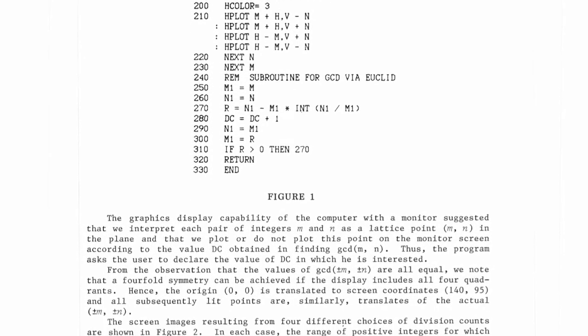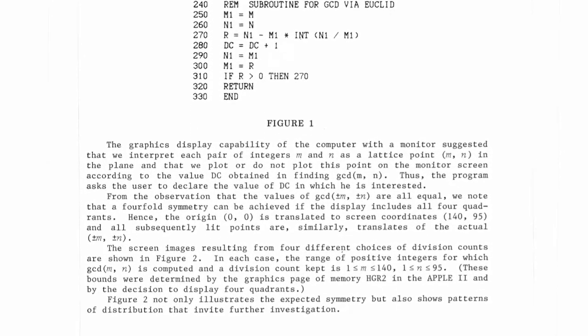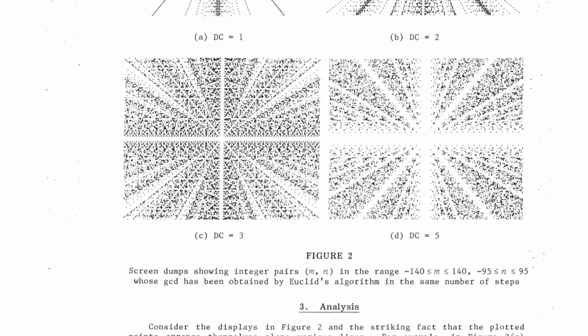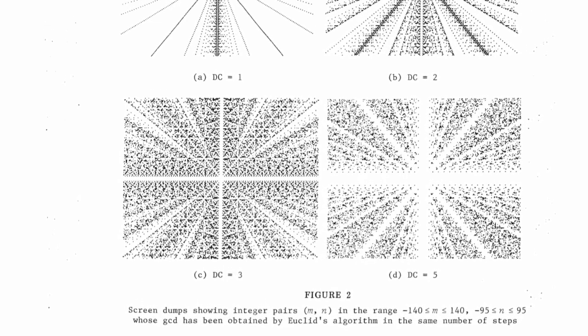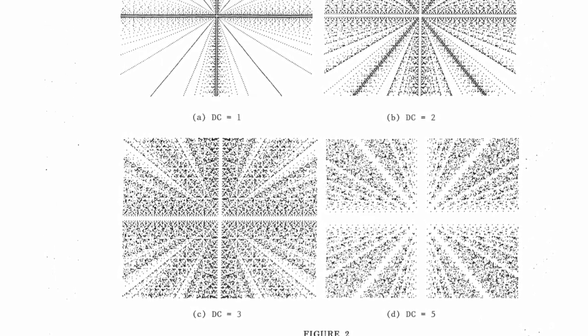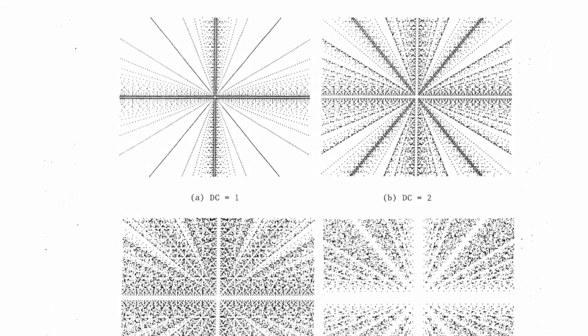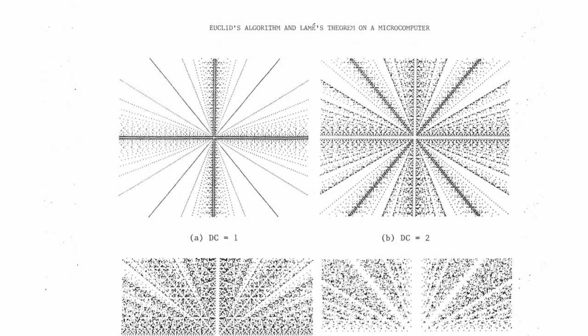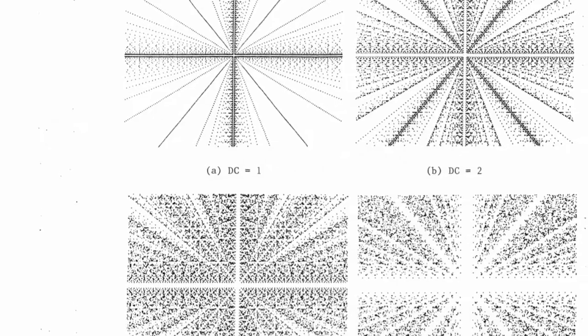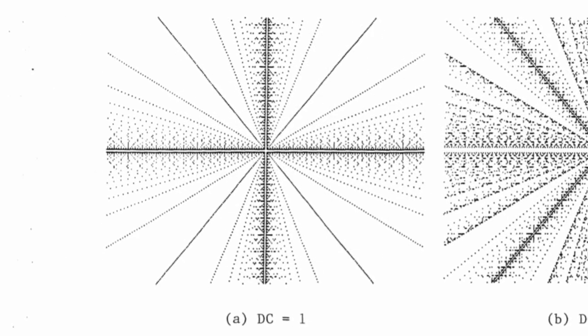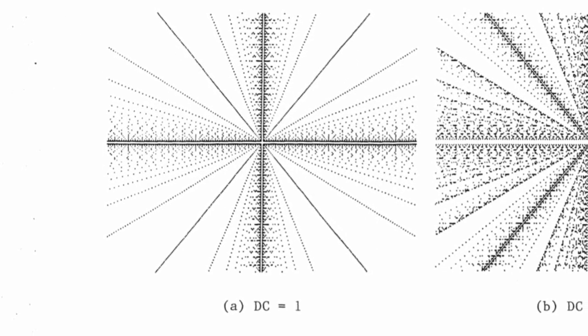The points (M, N) are plotted which have a fixed DC in calculating the GCD of M and N. A 4-fold symmetry is achieved because the values of GCD of plus or minus M, plus or minus N are all equal. Looks like some awesome designs were produced. The paper further investigates the patterns obtained. For instance, the first image for DC equals 1 shows that the points (M, N) plotted are arranged along several lines.